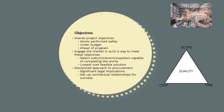So what are we trying to achieve through the procurement process? If we take a step back and look at the overall project's objectives, we're trying to get the job done safely, under budget and ahead of program. With procurement, we want to engage the market in such a way to meet these objectives — selecting the subcontractors and suppliers capable of completing the job in the way we require at the lowest feasible cost. Procurement has significant legal implications as well as overall impacts on project outcomes, so there needs to be a disciplined approach in place to ensure we put in place the right contractual relationships and set the project up for success.